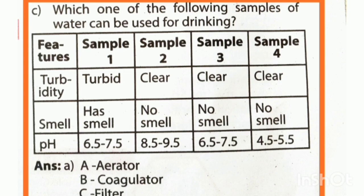Regarding smell: one sample has smell, while three samples have no smell. There are 4 samples. The pH values are: 6.5 to 7.5, 8.5 to 9.5, 6.5 to 7.5, and 4.5 to 5.5.